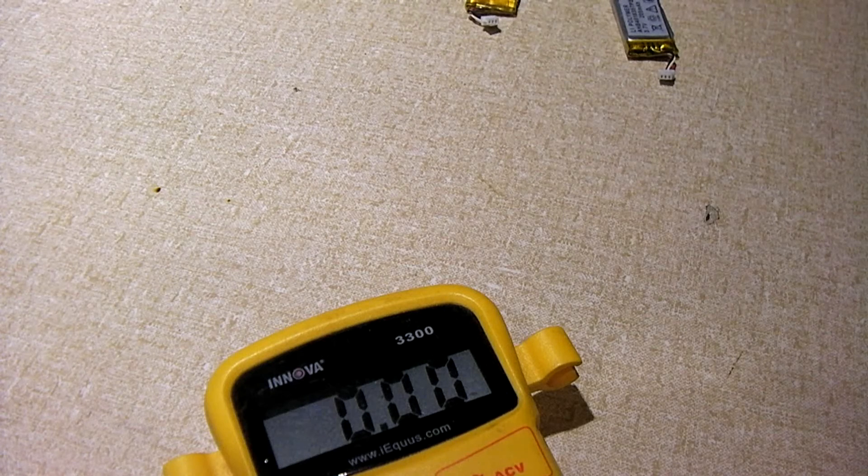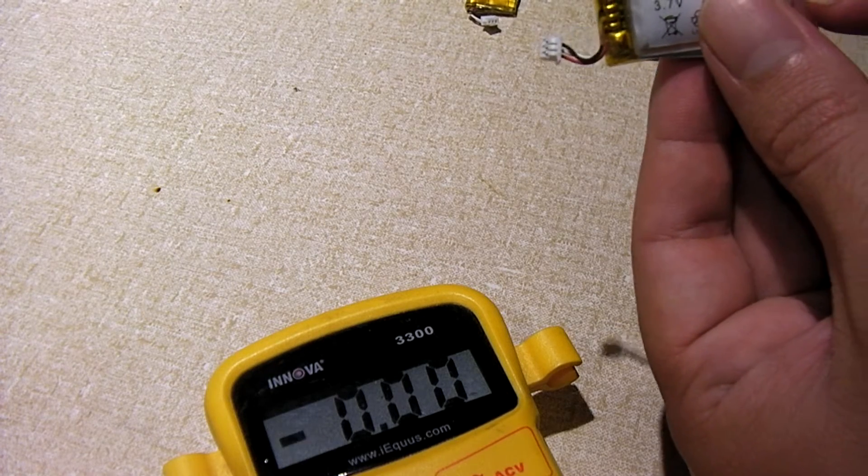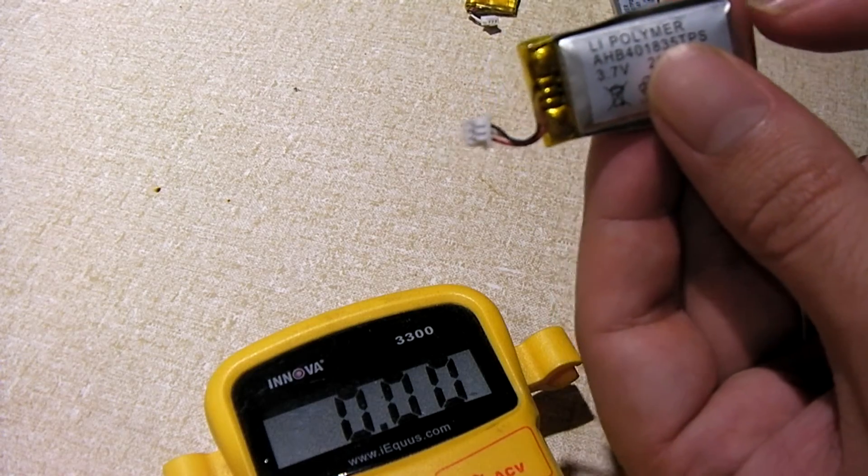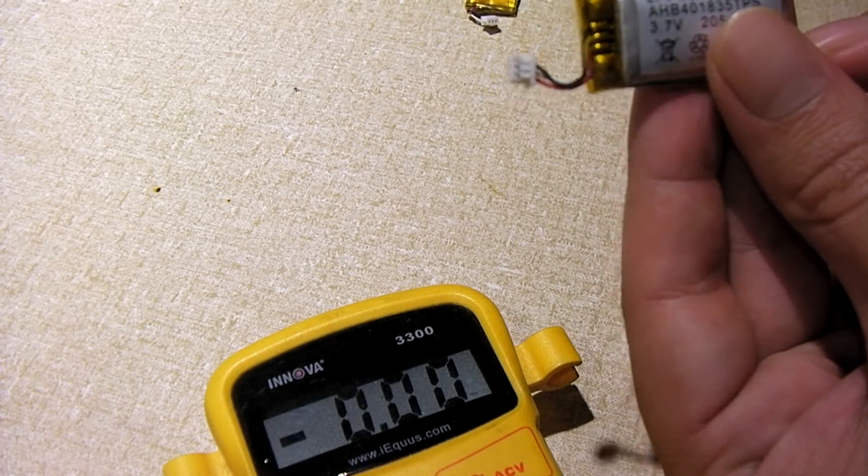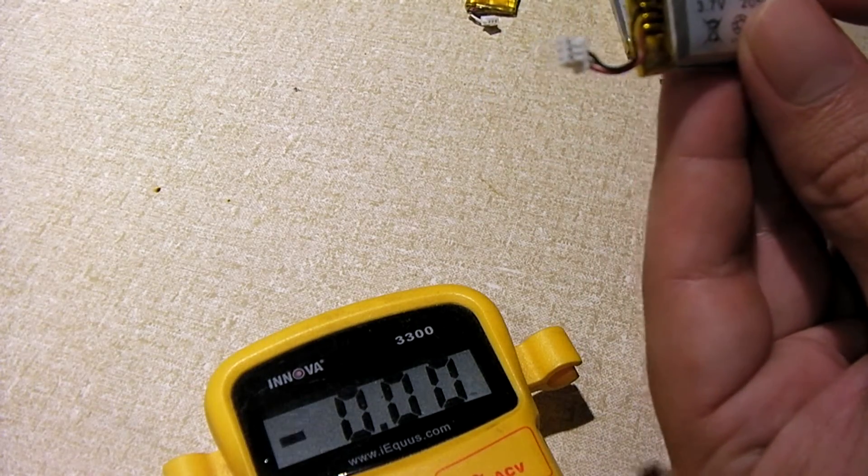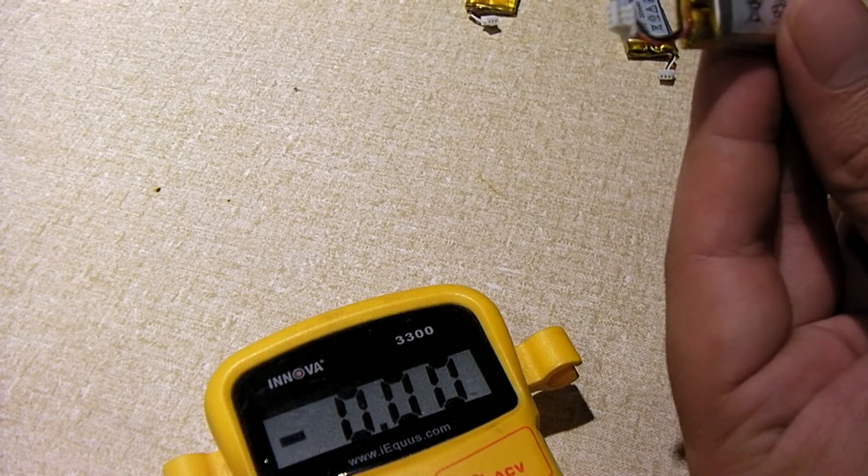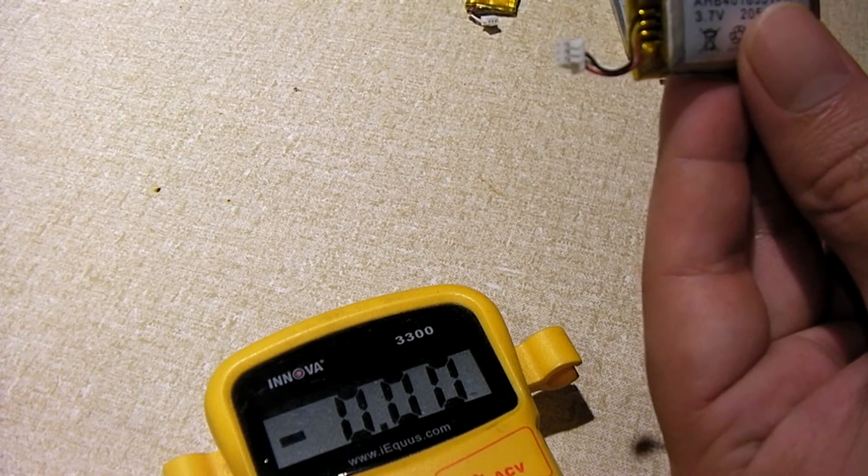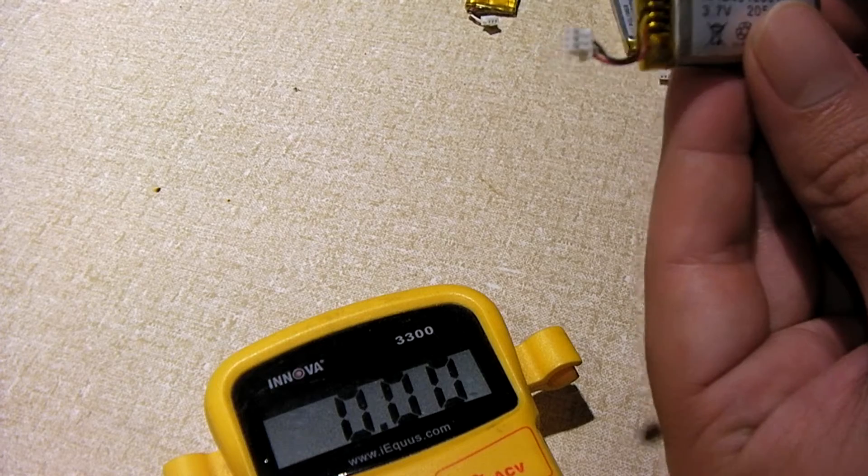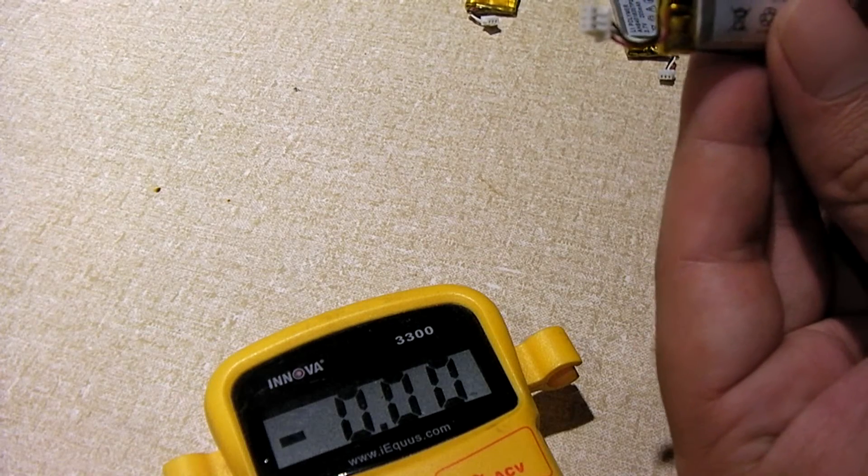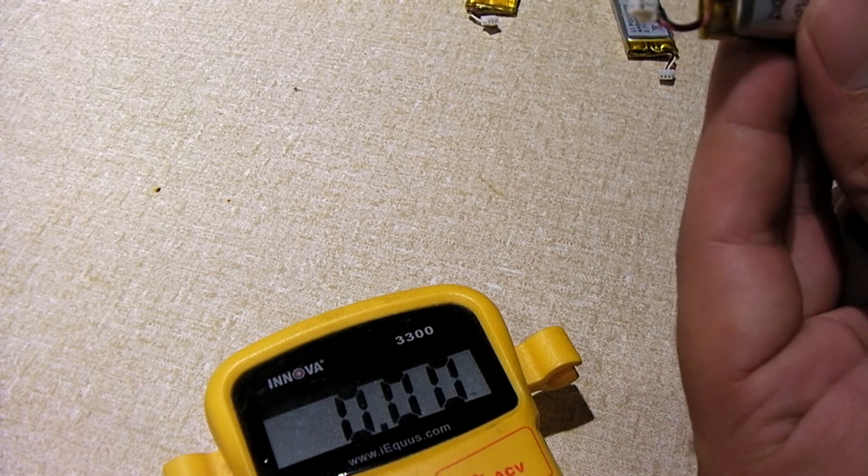I suspect what may have happened is this cell may have developed an internal short. Not a very quick one, just a slow one. Not enough to where the battery would self-destruct, but enough to where it would drain itself down. I'd say this is probably a more common failure on these.